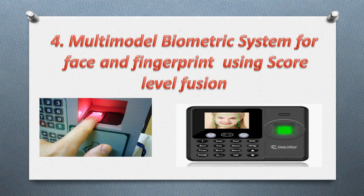The fourth project is a multimodal biometric system for face and fingerprint authentication using score level fusion. For example, if someone has a secure locker, both their fingerprint and face must match together. If the face belongs to Mr. Kumar but the fingerprint is someone else's — or vice versa — the system triggers an alarm. This prevents hackers from using a duplicate fingerprint alone. Score level fusion combines both scores, similar to how cutoff marks use 50% entrance and 50% academic marks.